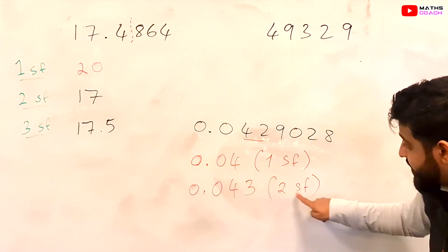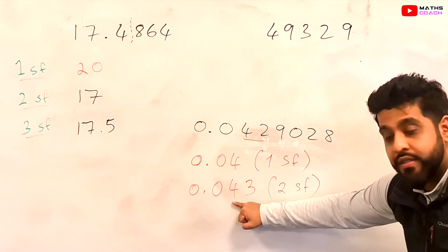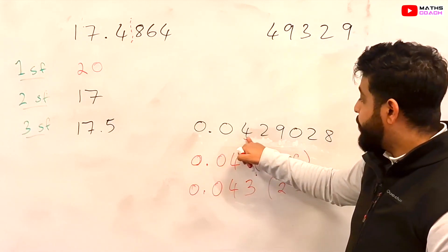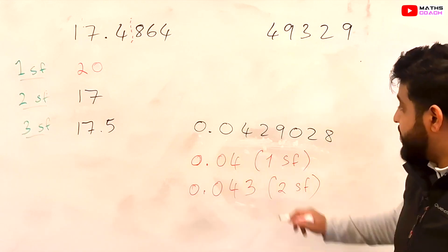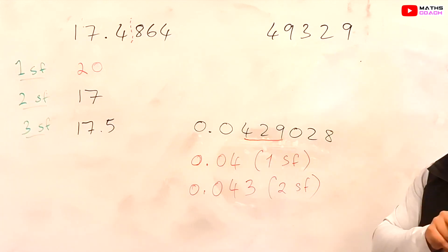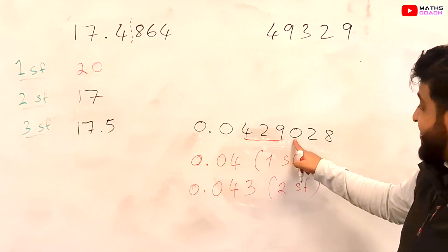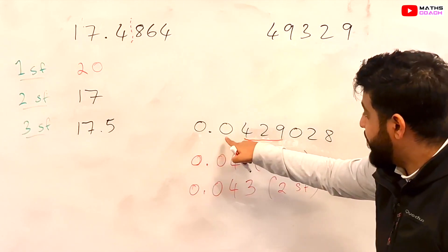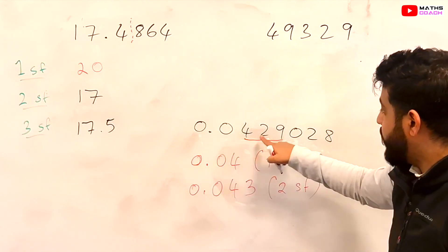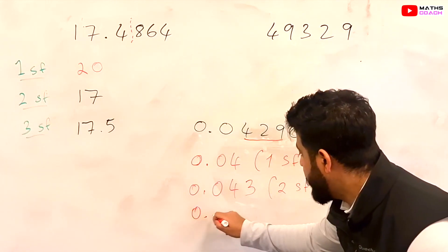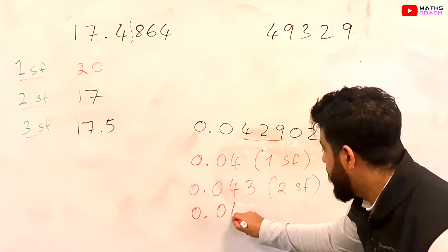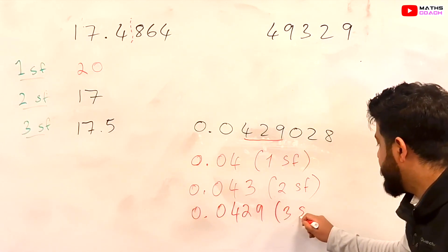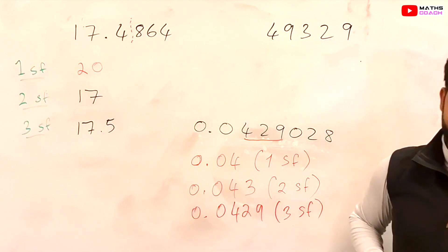You can see that to one significant figure we have one significant figure in the answer, and to two significant figures we have two. Finally, to three significant figures we consider 4, 2, and 9. The zero here we won't change, so the answer is 0.0429 to three significant figures.